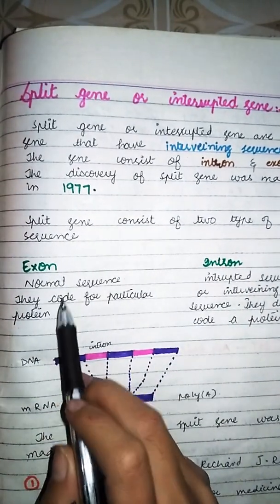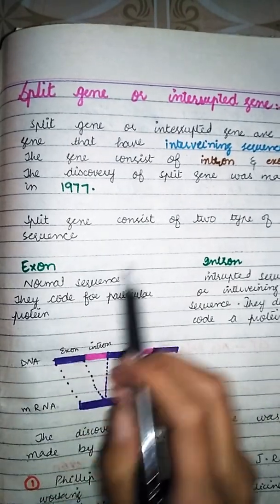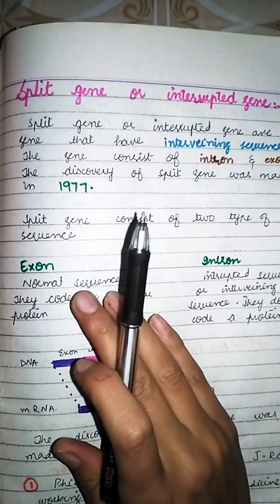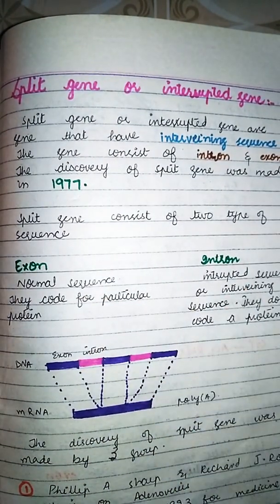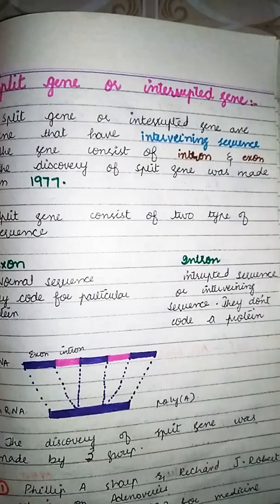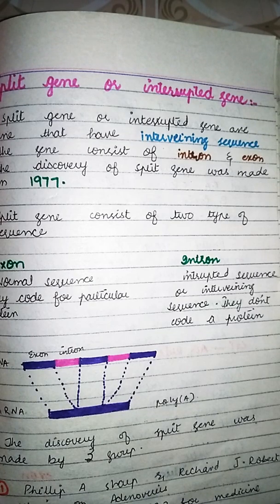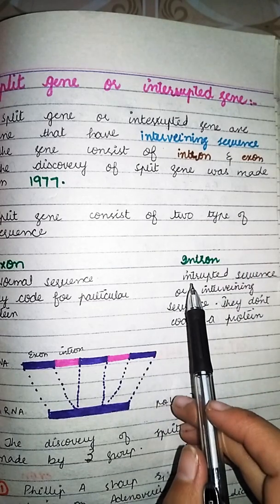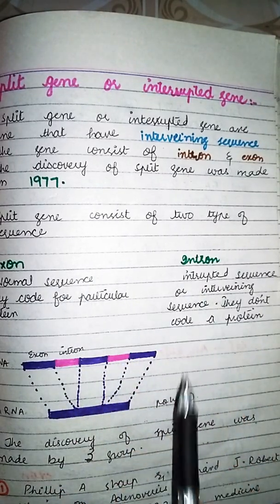Exon ایک normal sequence ہوتا ہے جو particular protein کو code کرتا ہے۔ جبکہ intron ایک interrupted sequence ہوتا ہے — یہ intervening sequence ہوتا ہے جو کسی بھی protein کو code نہیں کرتا۔ Intron کا 'i' interrupted sequence سے آتا ہے، اور exon وہ normal sequence ہوتا ہے۔